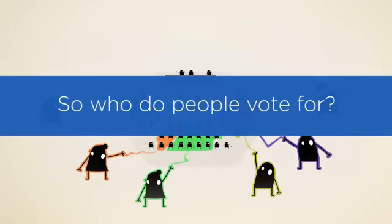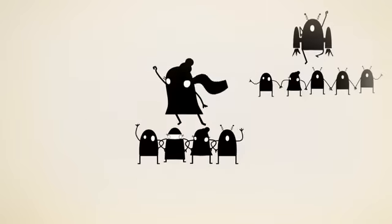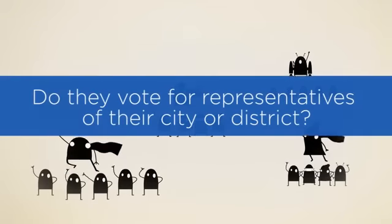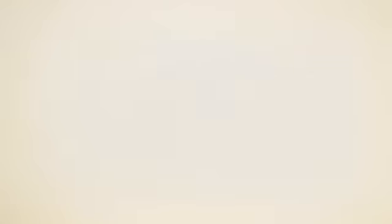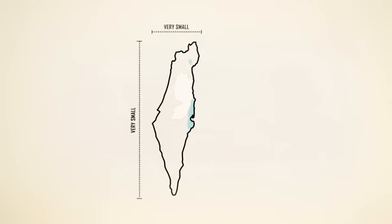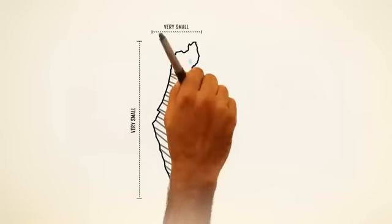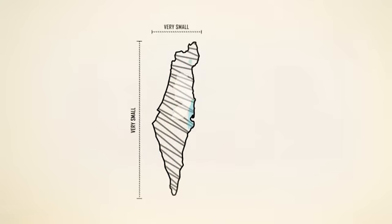So who do people vote for? They vote for the party they like, not individual candidates. Do they vote for representatives of their city or district? Israel is very small, so the whole country is a single constituency. The 120 Knesset seats are divided proportionally to the number of votes that each party wins.